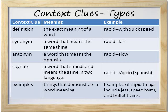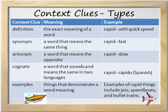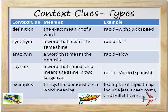And finally, the fifth type of context clue that we'll study today is examples. Examples are things that demonstrate a word meaning. Examples of rapid things include jets, speedboats, and bullet trains.